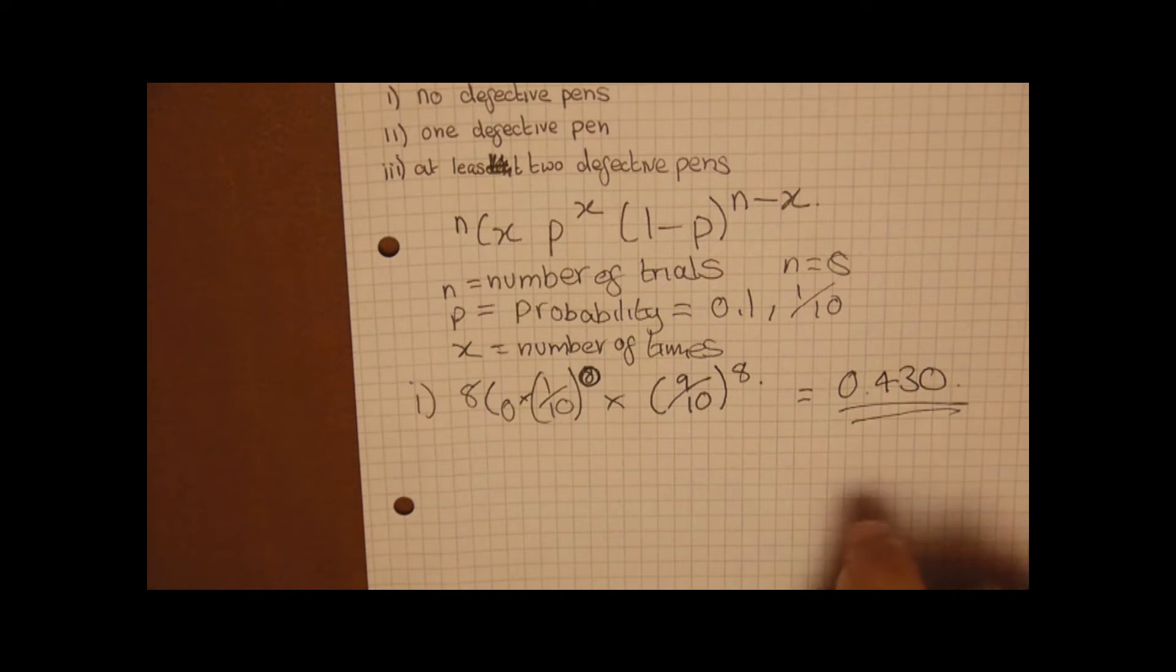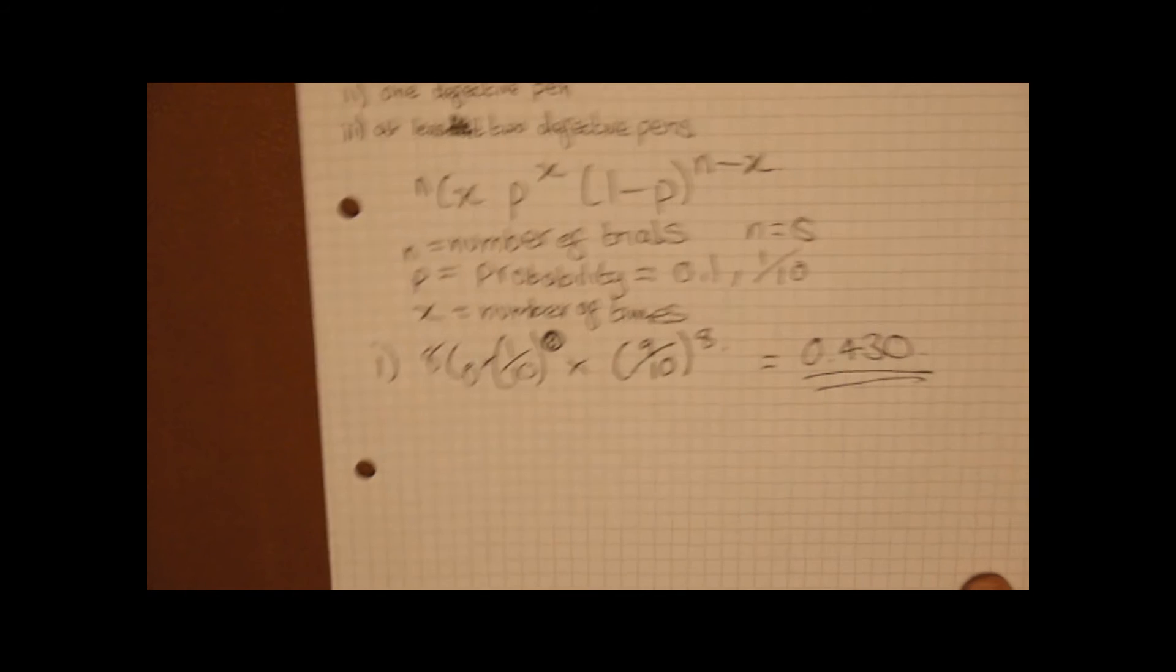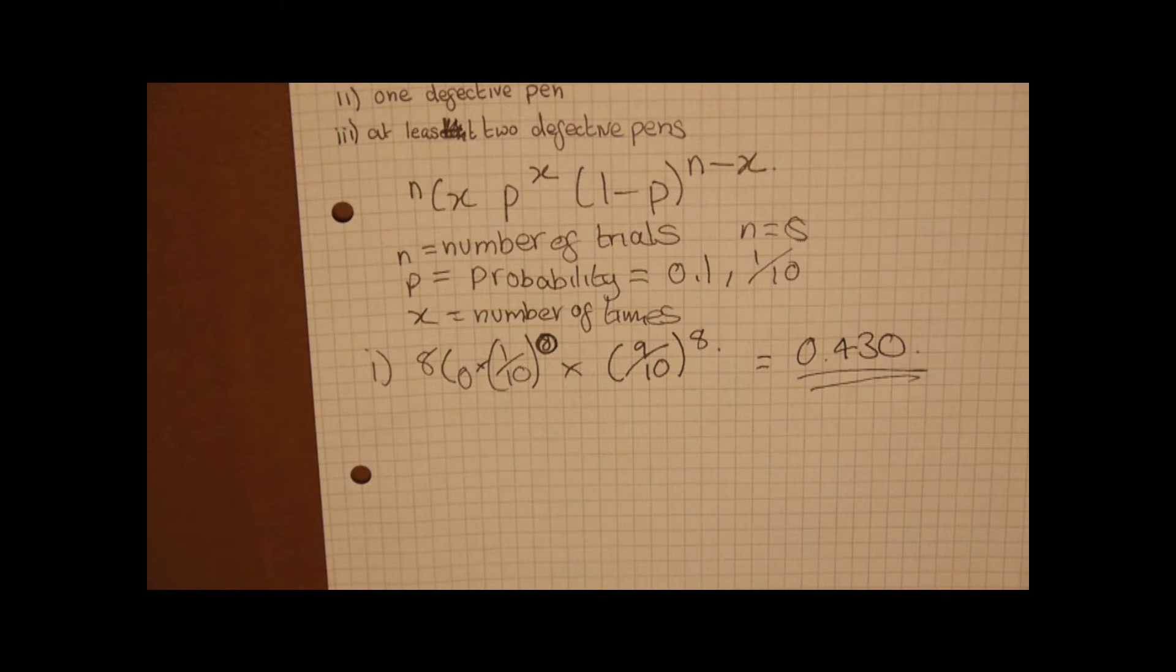Now you typically do these to 3 decimal places. This is just to give yourself a more accurate answer. It's usually the way you'll see things in answer schemes as well.